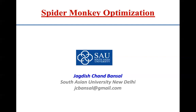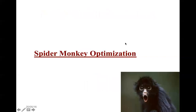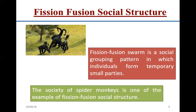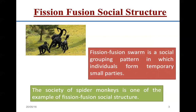This algorithm is inspired by the foraging behavior of spider monkeys. Spider monkeys are a particular species living in deep forests with a very special foraging behavior called the fission-fusion social structure. This particular social structure helps them forage and find food sources in a very efficient way, and it has been modeled as an optimization algorithm to solve very complex optimization problems.